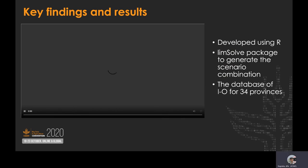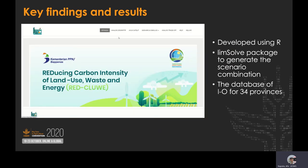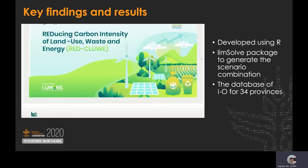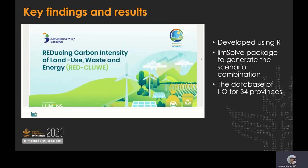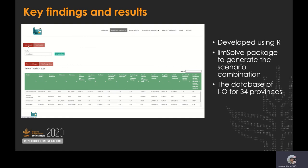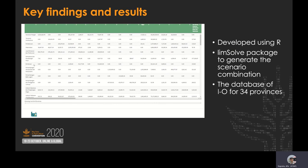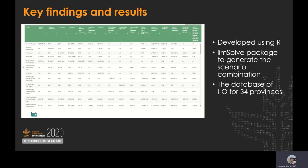Our key findings include redglue.id as the implementation of the EEIO approach, which has been considered as a national planning tool. Redglue.id is developed using R with the Shiny package, which provides a powerful web framework for building web applications using R. The Linsolve package is also used to generate scenario combinations. The most important part is the big data from the regional economic and satellite accounts of 34 provinces in Indonesia.